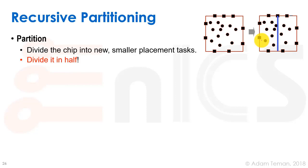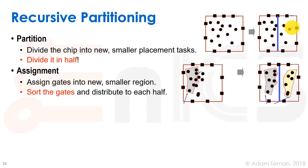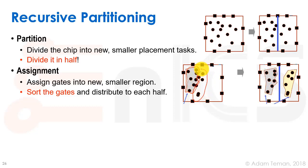More formally: in the partitioning stage, we divide our current solution in half — either vertically or horizontally, alternating each level. We then assign gates to the new smaller regions by sorting on the other axis. We sort all gates on that axis, take the first half — the most left-placed — and assign them to the left partition, and assign the remaining half to the right partition.